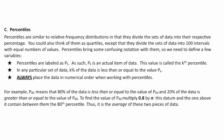P80 would have 80% of the data less than or equal to the value of PK, and 20% of the data greater than or equal to PK. To find that boundary, we multiply 0.8 by N, where N is the number of items of data in the sample. The data points above that position are greater than the 80th percentile.